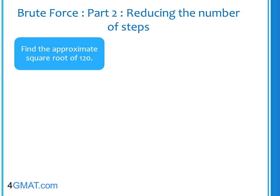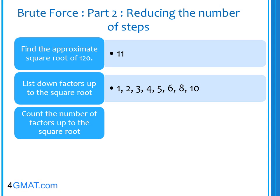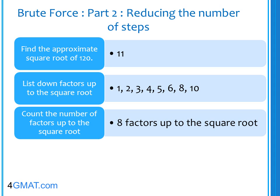The first step is to find the approximate square root of 120, which is 11. Next, list down the factors of 120 up to the square root. The factors up to 11 that are factors of 120 are 1, 2, 3, 4, 5, 6, 8, and 10. Count these factors — you have a total of 8 factors up to the square root.